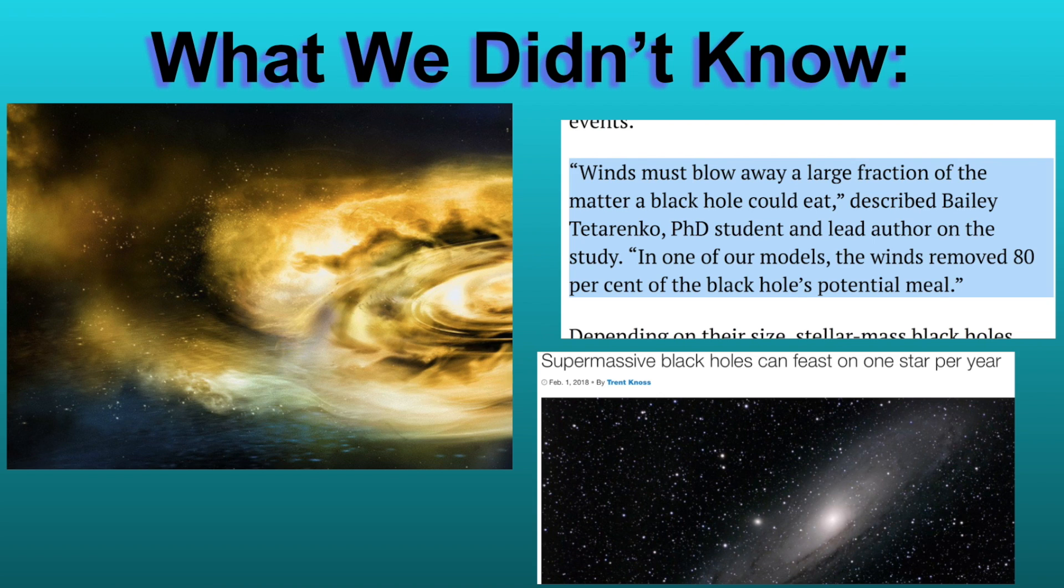There had certainly been the concept that some of the material, especially as it underwent spaghettification, could be blown out by some of the powerful electromagnetic off-put that's in the region. But in no way did we think that up to 80% of this stellar material was not consumed or blown out the cosmic jets north and south, but blown out basically along the equatorial regions of the galaxy and a bit north and south as well.